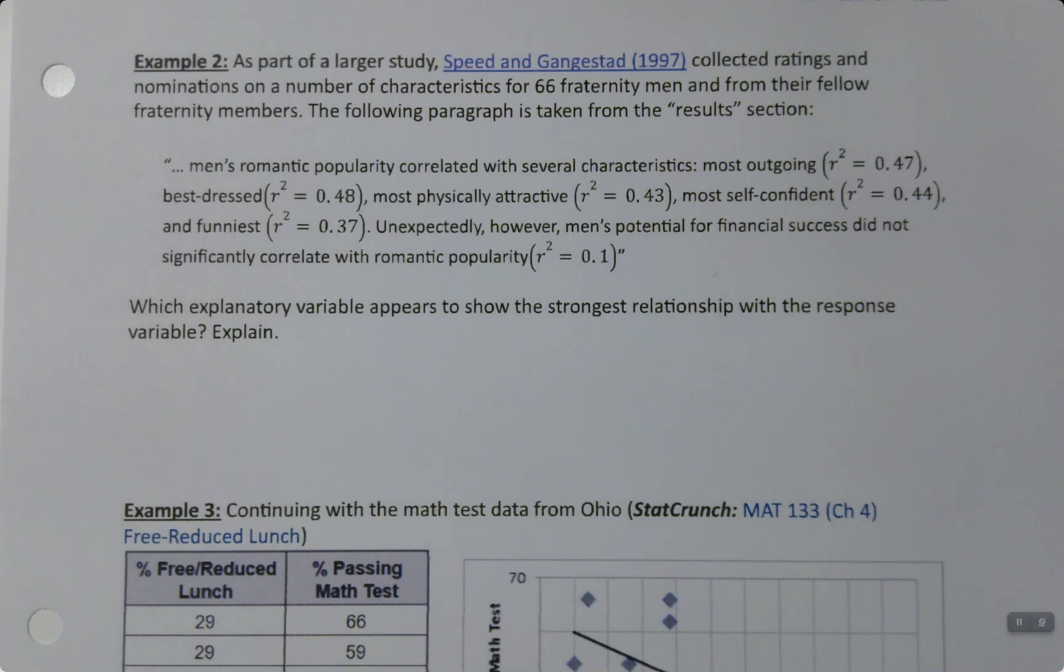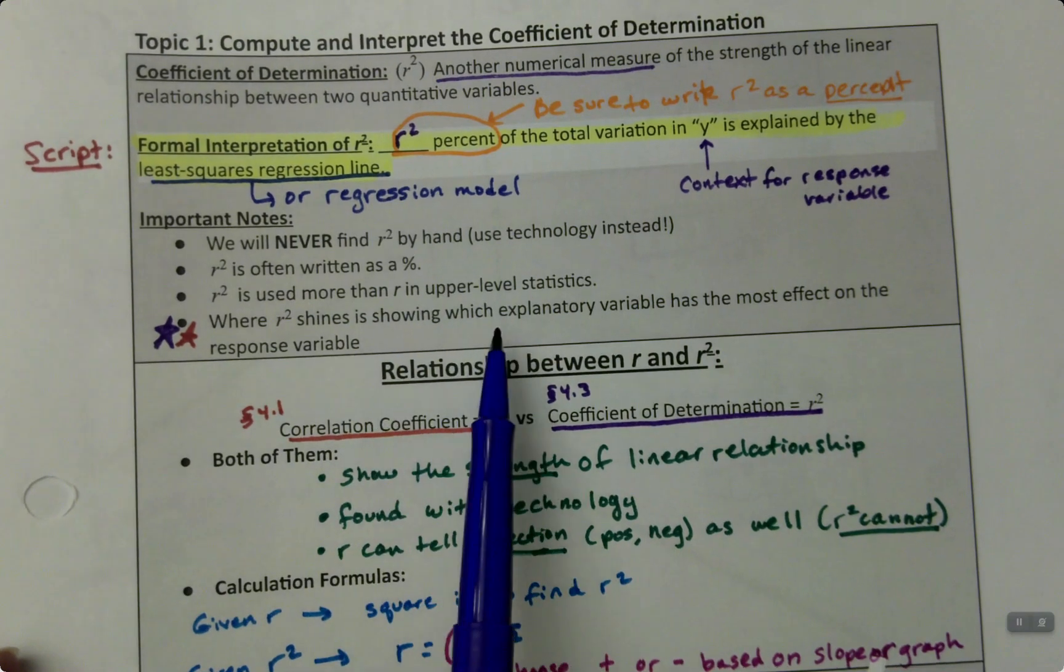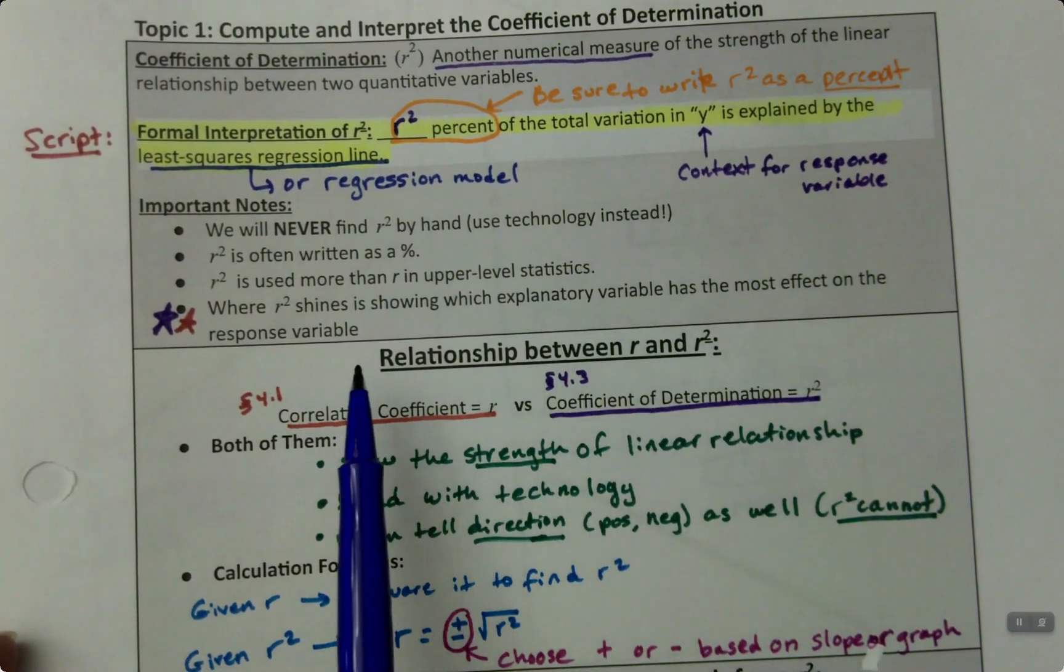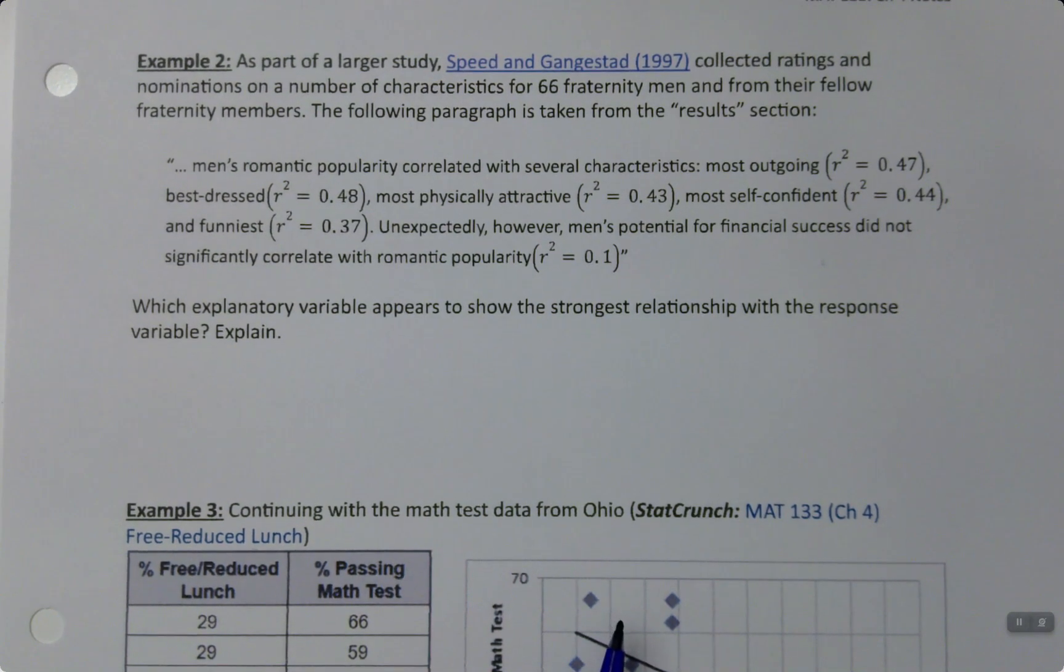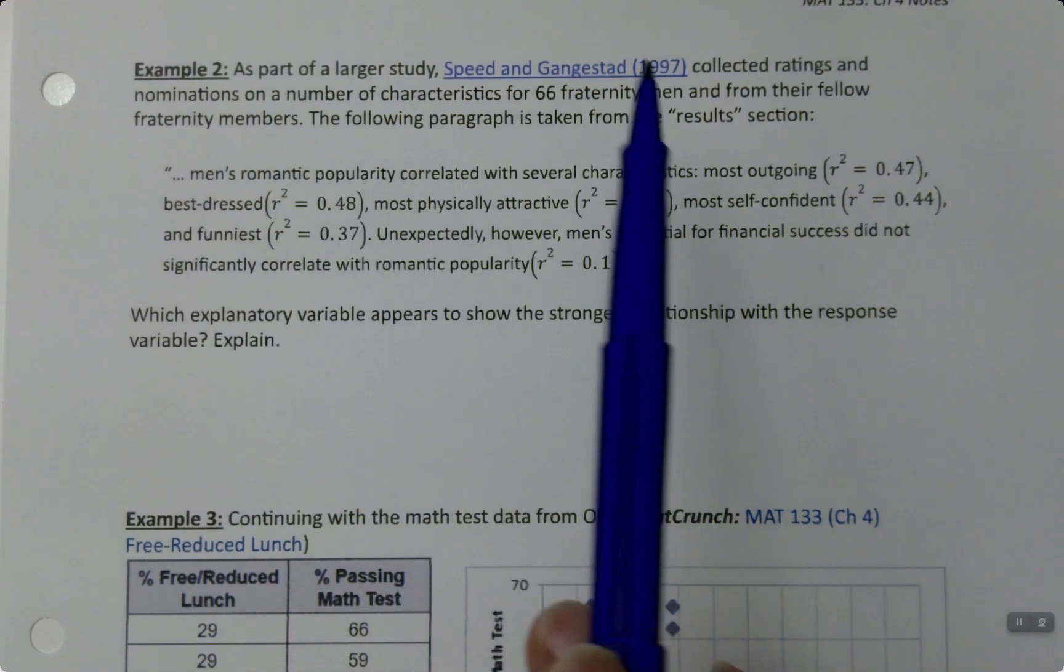I mentioned earlier that R-squared really shines in showing which explanatory variable has the most effect on the response variable, and we can really see that here in this question. This is a real study that was done in 1997.